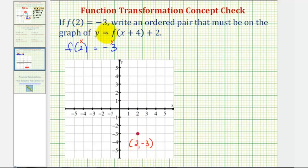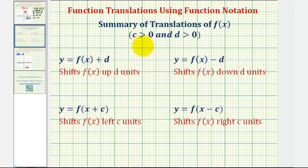So now based upon this function notation, we should be able to recognize the translations and then translate this given point. For review, if we begin with the basic function f of x, and both c and d are positive: y equals f of x plus d would shift f of x up d units, because we're adding d to the function values or y values of the basic function f. And therefore, y equals f of x minus d would shift f of x down d units.